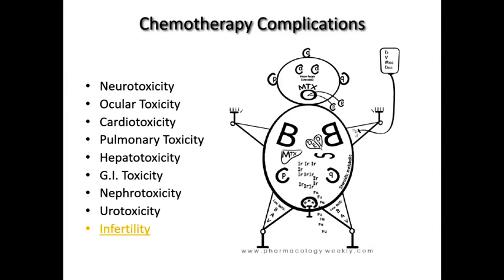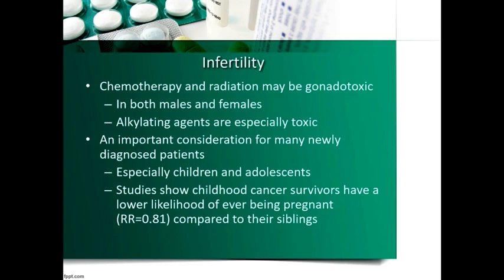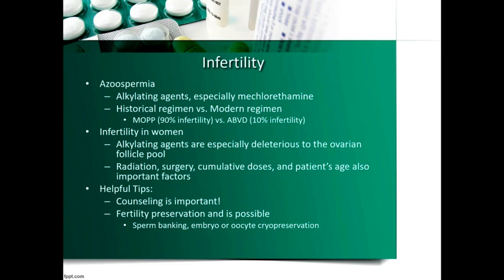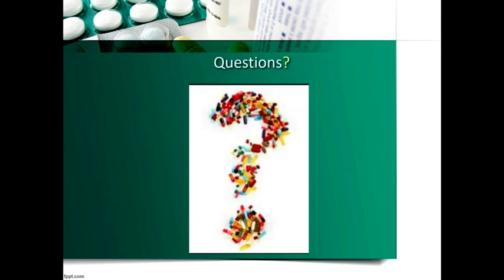Finally, infertility — chemotherapy and radiation may be gonadotoxic, and both males and females may develop infertility following chemo. This is typically not a major concern in older adults, but for a young Hodgkin's lymphoma patient at 20, a young breast cancer patient at 30, or pediatric patients, infertility can be a big issue. They need counseling, and we should look into how gonadotoxic these agents are and possibly pursue fertility-sparing procedures or collection of oocytes or sperm.